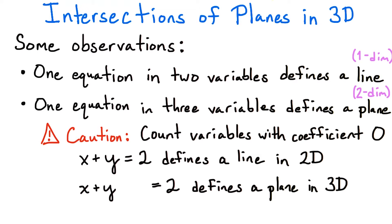However, we need to be careful to distinguish between an equation in two variables and an equation in three variables where one of the variables has a coefficient of zero. In the former case, the equation defines a line in 2D, but in the latter case, the equation defines a plane in 3D. Being aware of the context of your problem will help you avoid this error.